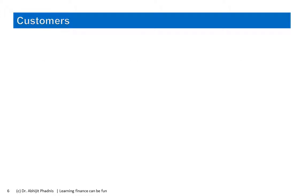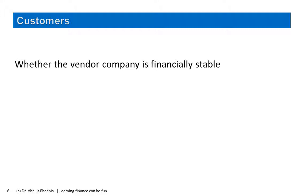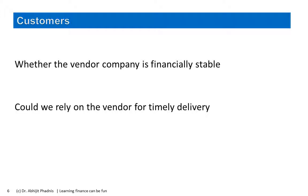Customers are the next stakeholders who also look at their vendor's financial statements. Their prime interest is whether the vendor company is financially stable, because if a customer places an order and the vendor goes belly up, the customer's business may also suffer. That is why before placing an order and getting into a relationship, customers are often very cautious to look at the financial position and monitor it on an ongoing basis. A key issue is whether they can rely on the vendor for timely delivery, since cash flow stress or other challenges may affect the vendor's ability to deliver material on time.